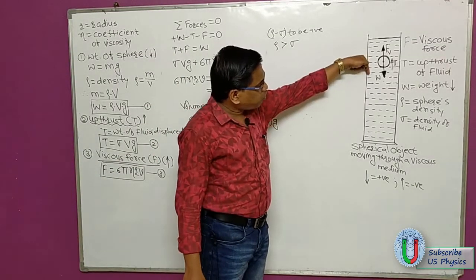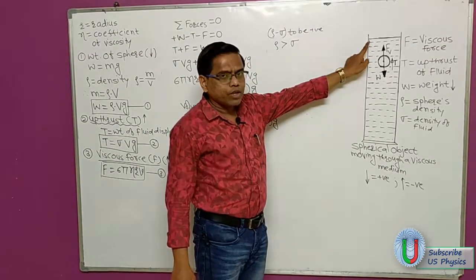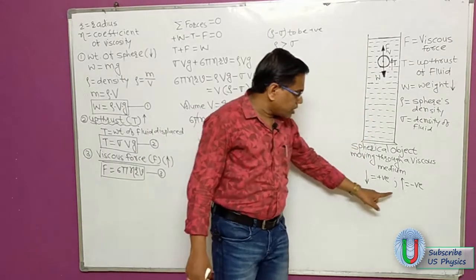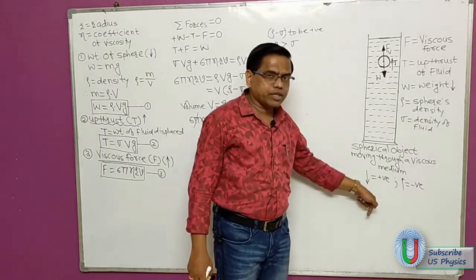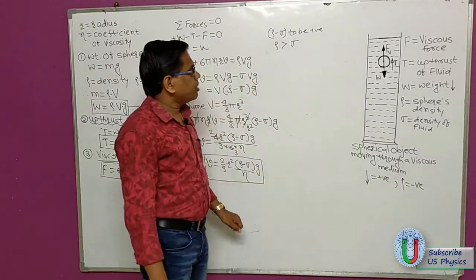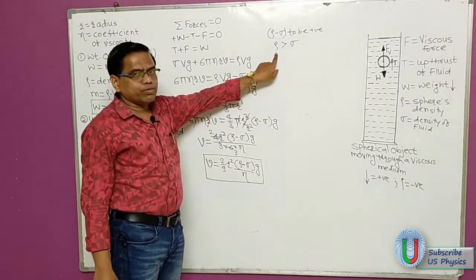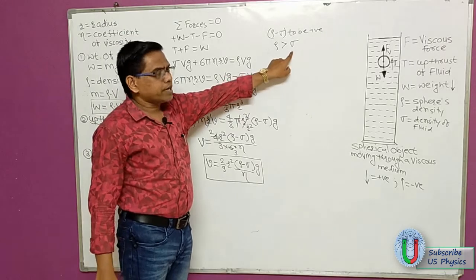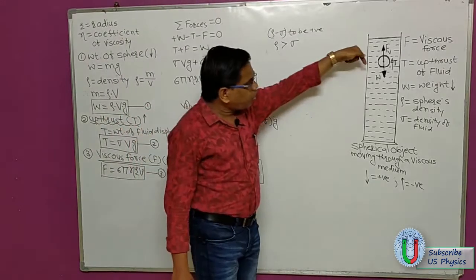Whether the sphere falls downward or moves upward depends on the sign of this velocity. We defined vertically downward as the positive direction. When the density of the sphere is greater than the density of the fluid, (ρ − σ) is positive, so terminal velocity is positive — meaning the sphere falls vertically downward.